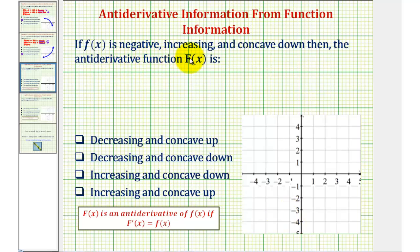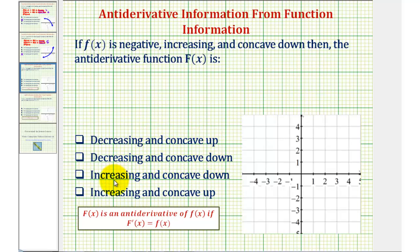If f of x is negative, increasing, and concave down, then the antiderivative function big F of x is one of the following: decreasing and concave up, decreasing and concave down, increasing and concave down, or increasing and concave up.